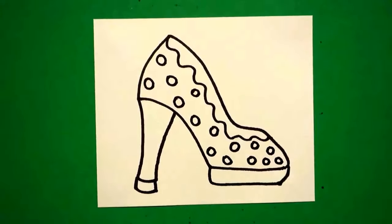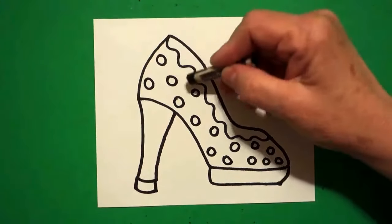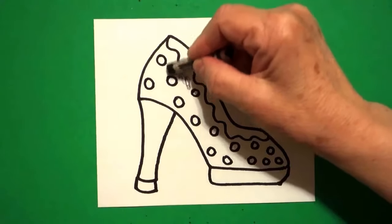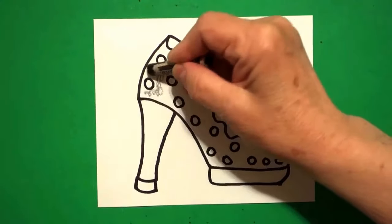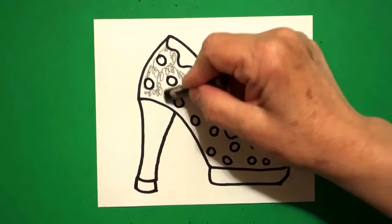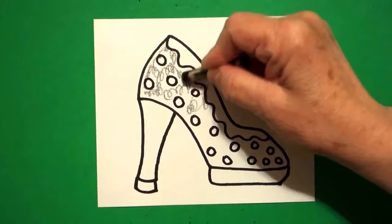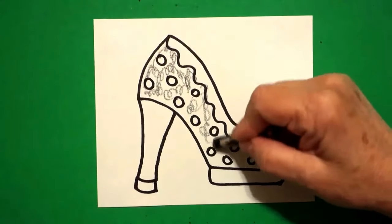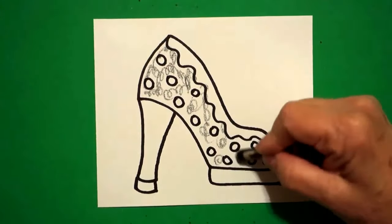All right, let's see how we're going to color this in. For my high heel, I only need two colors. I'm going to do my base part, this whole section, black. But I'm not going to color it so dark that I totally annihilate or take out my decorations that I've drawn, my polka dots.